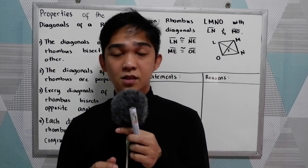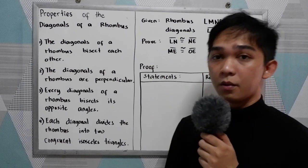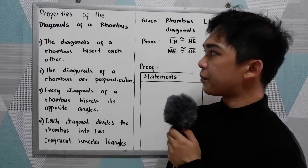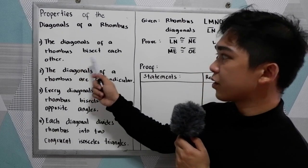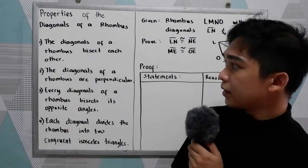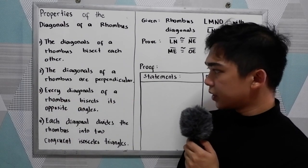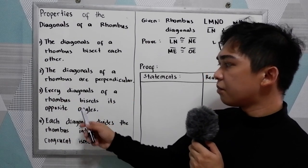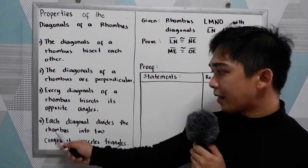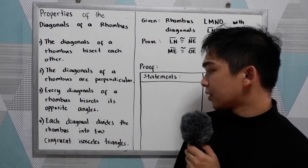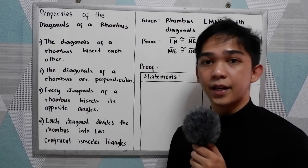Good day everyone. Today I will be discussing the properties of the diagonals of a rhombus. We have four properties. Number one, the diagonals of a rhombus bisect each other. Number two, the diagonals of a rhombus are perpendicular. Number three, every diagonal of a rhombus bisects its opposite angles. And number four, each diagonal divides the rhombus into two congruent isosceles triangles.